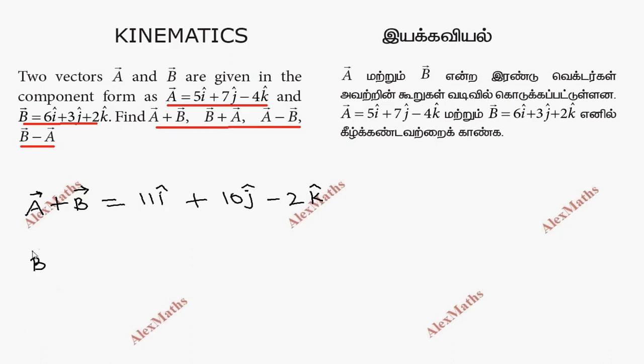Then we have B vector plus A vector. A plus B or B plus A both give 11i cap plus 10j cap minus 2k cap.